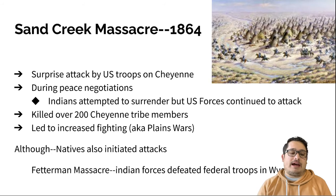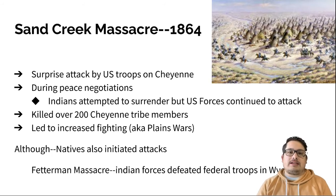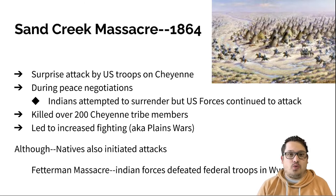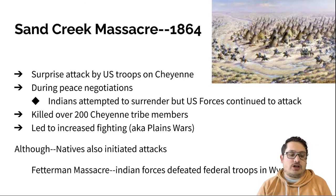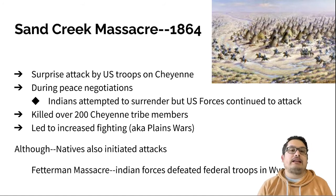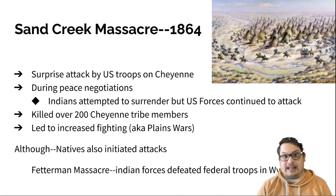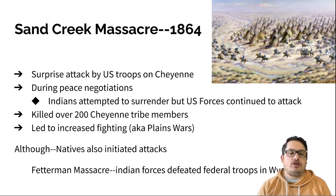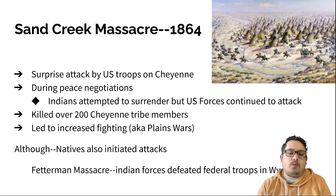The first major event is the Sand Creek Massacre in 1864, frequently seen as the jumping off point for violent clashes between America and Native American tribes. This is a surprise attack by U.S. troops on the Cheyenne during peace negotiations. They attempt to surrender but we don't let them — we keep fighting and kill over 200 tribe members, including women and children. This is going to lead to what are called the Plains Wars.